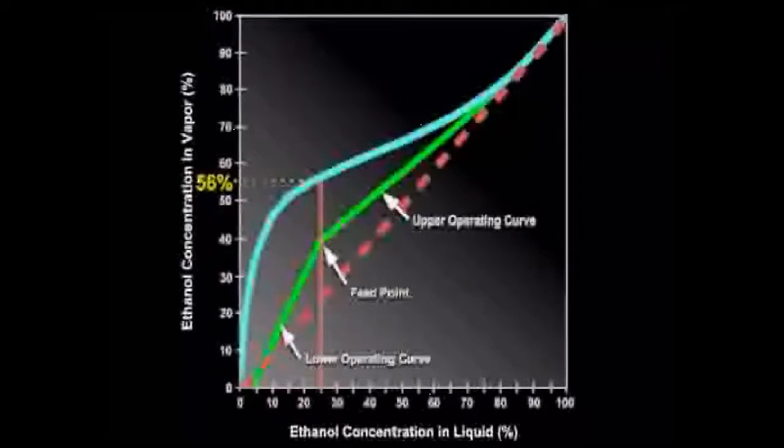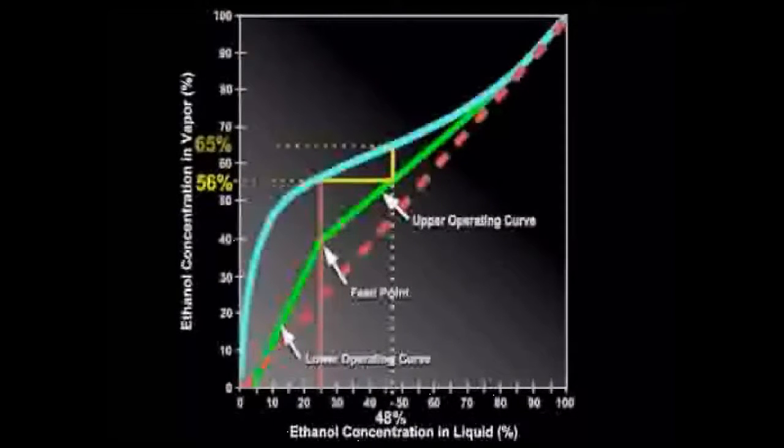The answer is given by the operating curve since it maintains the mass balance. We draw a horizontal line over to the operating line and find that the liquid mixture in the stage above the feed stage has an ethanol concentration of 48%. The vapor in this stage is 65%.